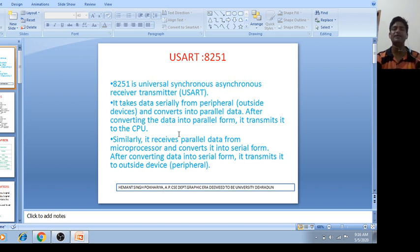Similarly, it receives parallel data from microprocessor and converts it into serial form. After converting data into serial form it transmits it to the peripherals. This means peripherals are accepting or transmitting data serially and microprocessor is transmitting or receiving data parallelly with the help of 8251.